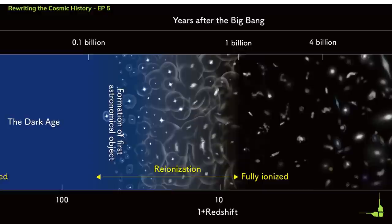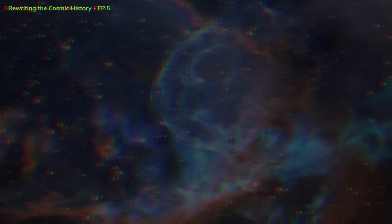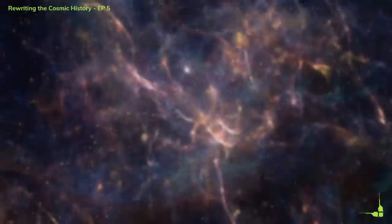These objects are thought to play a key role in the re-ionization of the universe, which is the process by which the neutral hydrogen that filled the early universe was ionized by radiation from stars and quasars. This process made the universe transparent to light and enabled us to see further back in time.